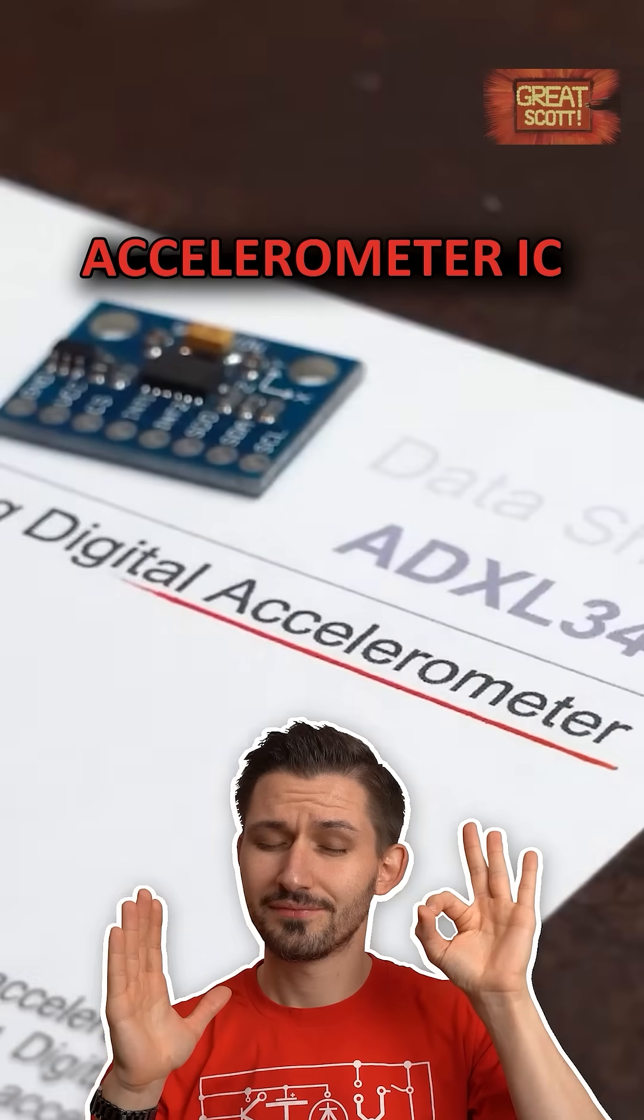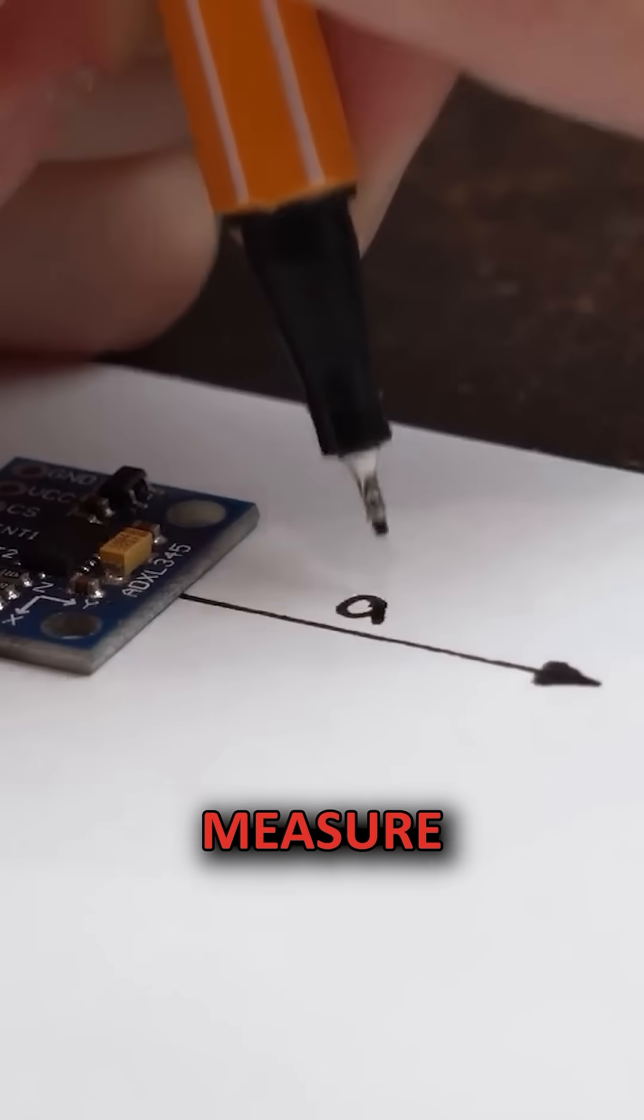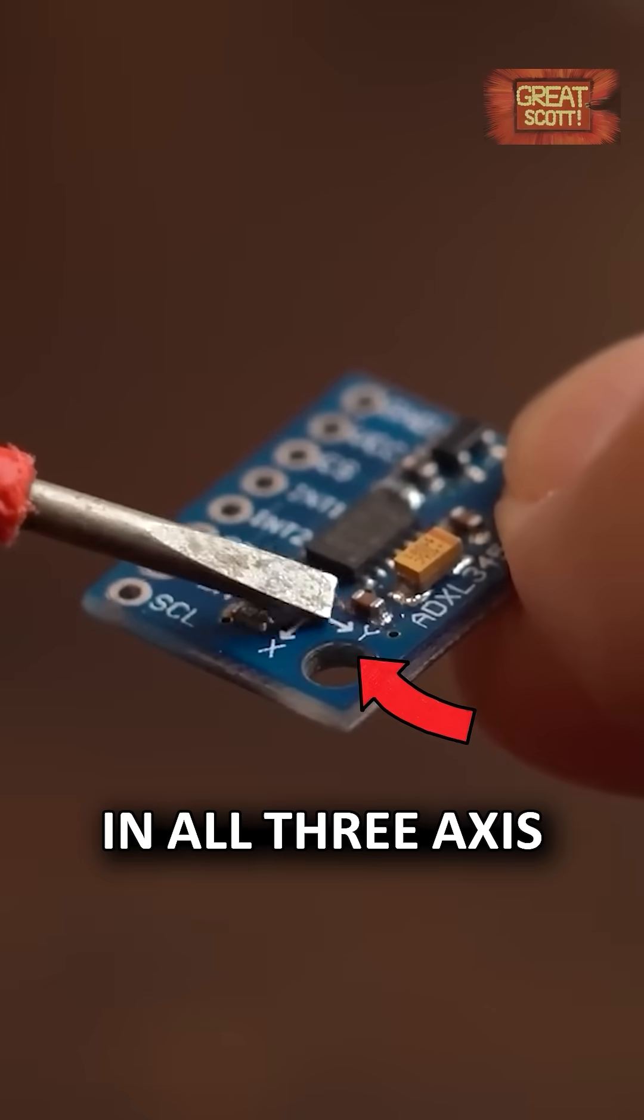This board is an accelerometer IC. An accelerometer can basically measure how much it gets accelerated in all three axes.